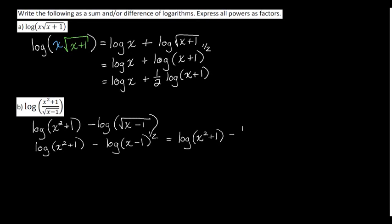And that 1 half exponent will come out in front. Notice how I'm not moving the squared on the x squared plus 1. That's staying there, because we don't have an exponent on the entirety of the argument, just on portions of it. So because of that, I can't pull it out. That x squared is going to stay there. But the 1 half was on the entirety of the argument. So it got to come out in front.